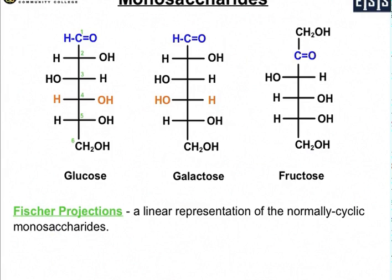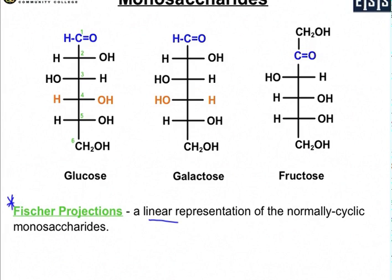Let's focus on the monosaccharides — the three we deal with in this course: glucose, galactose, and fructose. I show them here as their Fischer projections, which is a linear representation of a normally cyclic monosaccharide. They're normally in a cyclic structure, but they're much easier to draw in a linear representation. You'll notice they are all six-carbon structures, numbered one through six.